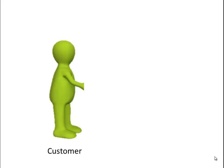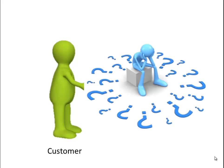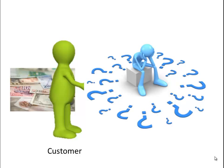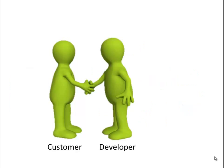Let's look at who is involved in developing new software. At minimum, we need a customer and a software developer. A customer is generally a person, group, or company who has a problem and believes that software can help solve some or all of that problem, and is willing to invest money to develop new software. A customer wants software because it helps them do something faster, cheaper, or better. Then there is the software developer or programmer who has the programming skills and time to build the software needed by the customer.